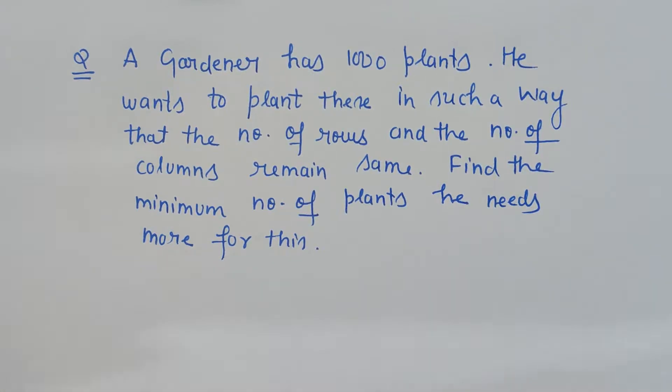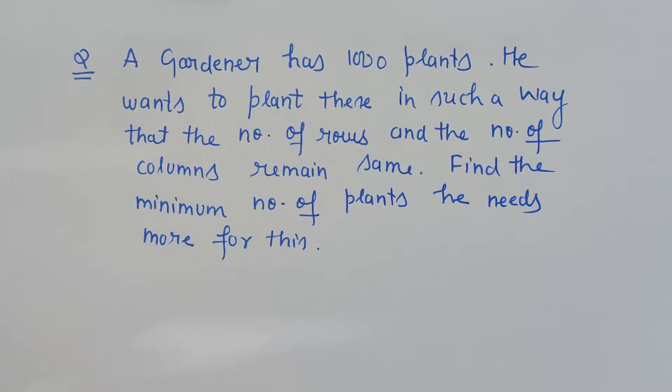Hello friends, it's a word problem on square and square roots where we are given a gardener has 1000 plants. He wants to plant these in such a way that the number of rows and the number of columns remain same. Find the minimum number of plants he needs more for this. If there are X number of rows of plants, then there must be X number of columns of the plants. Both should be same.